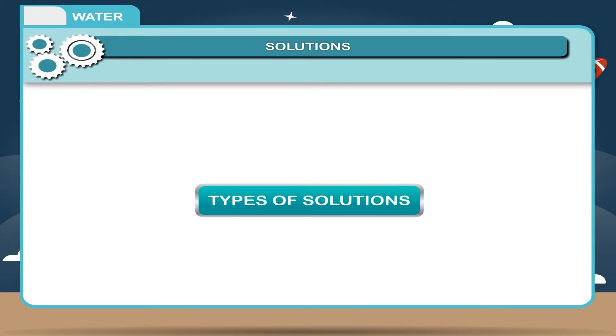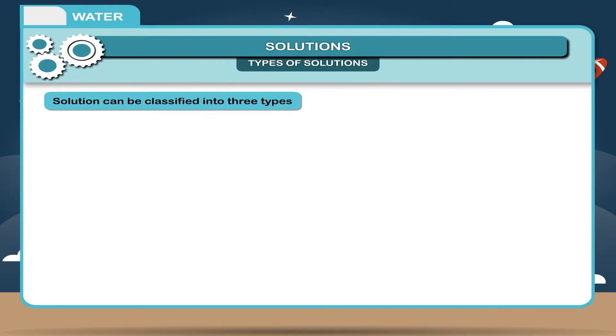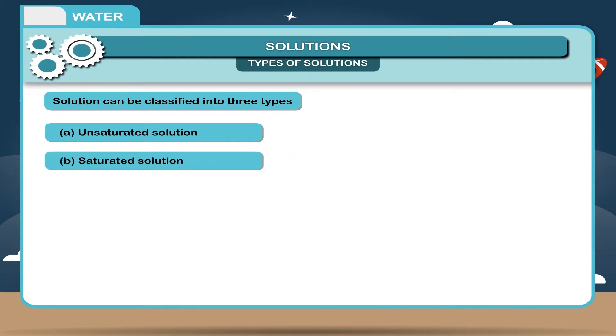Types of solutions. Solutions can be classified into three types: A. Unsaturated solution, B. Saturated solution, and C. Supersaturated solution.